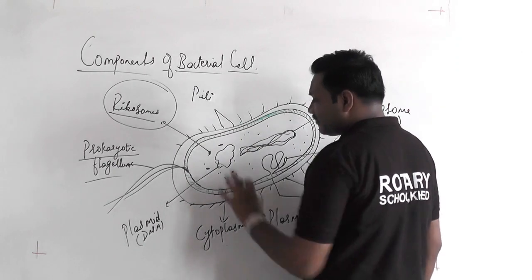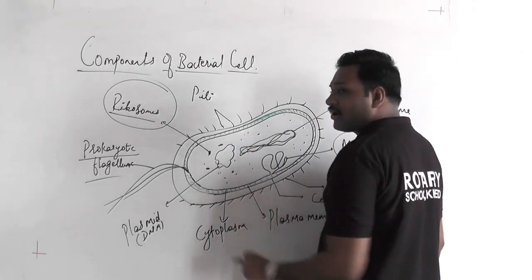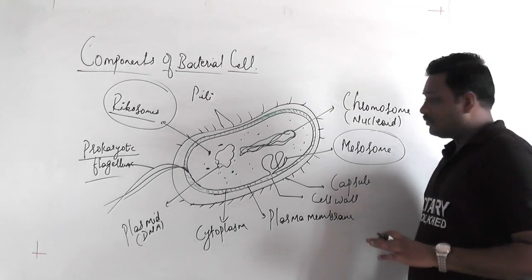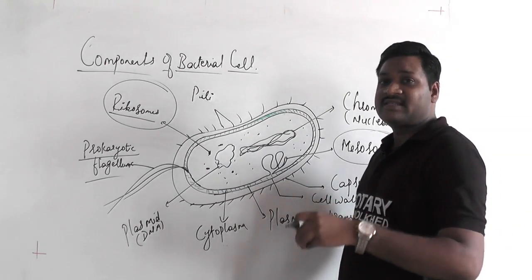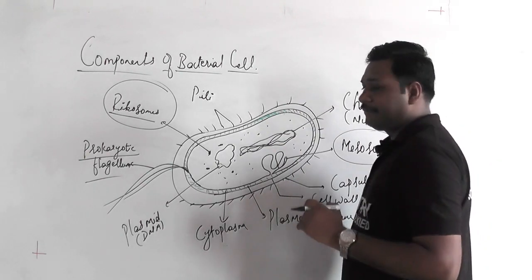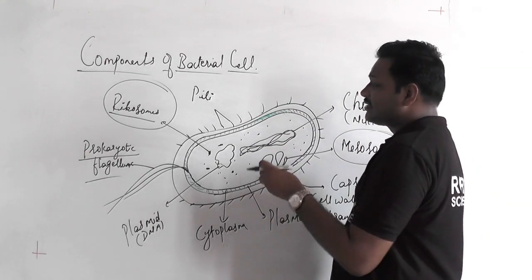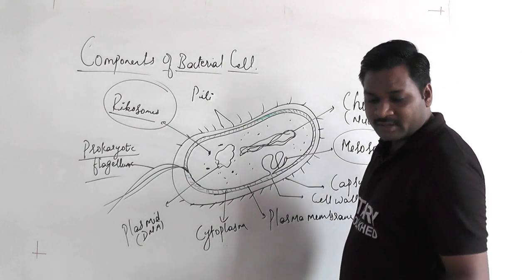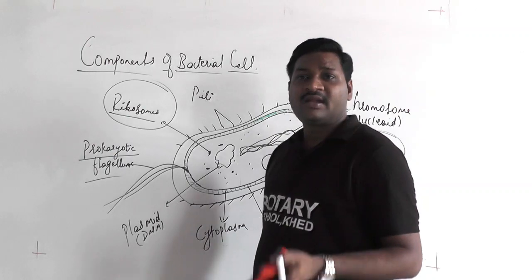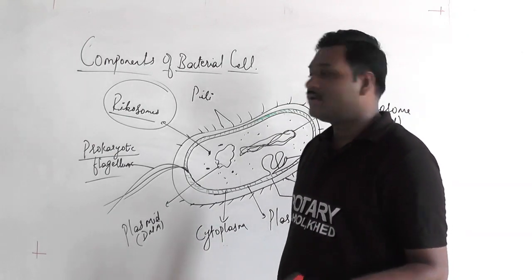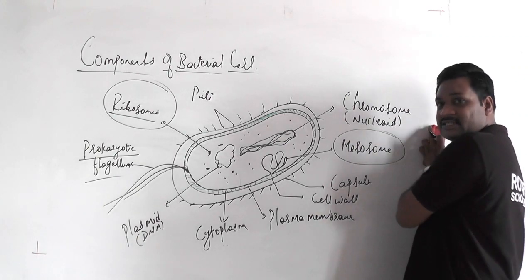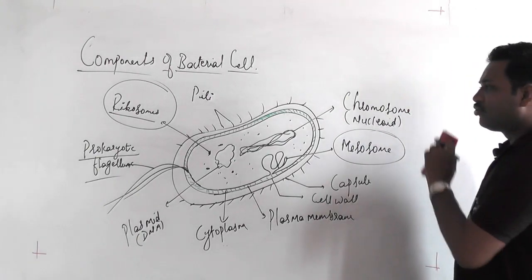Within the cytoplasm, all these cellular organs are present. We have discussed plasmid and pili previously. Today we will also discuss a few more points. There are different shapes of bacteria — like cocci and bacilli. I'll erase the board now; you can pause the video and note down the points.